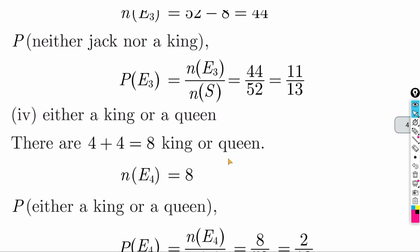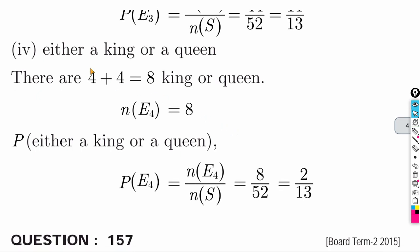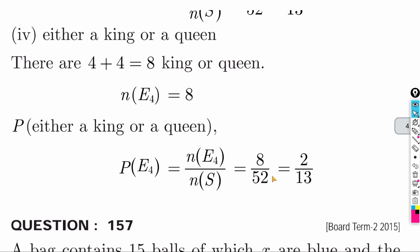Find probability of either a king or a queen. Kings = 4, queens = 4, total = 8 favorable outcomes. Answer: 8 by 52, which simplifies to 2 by 13.